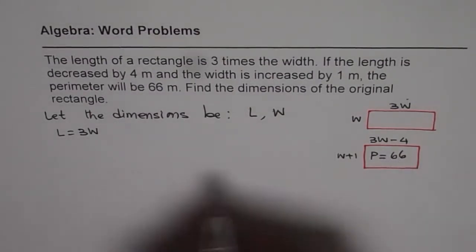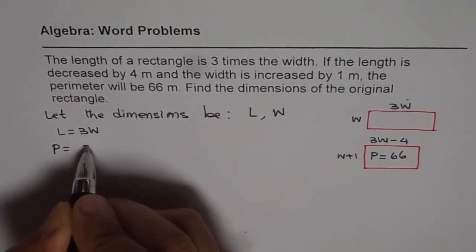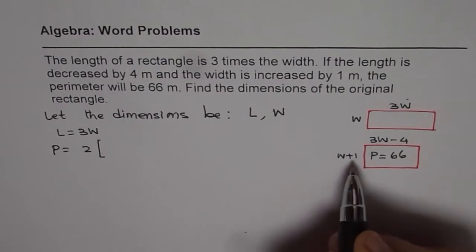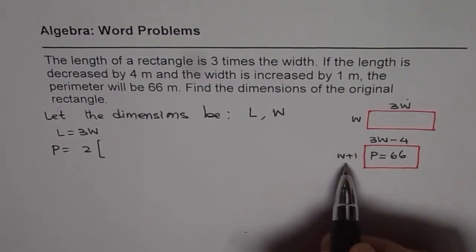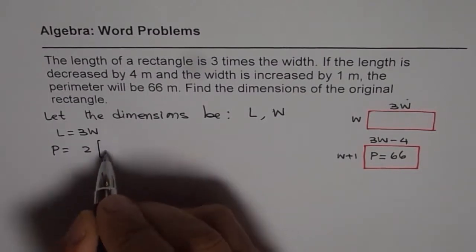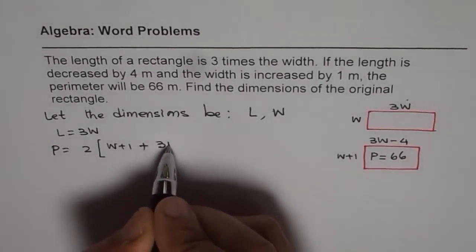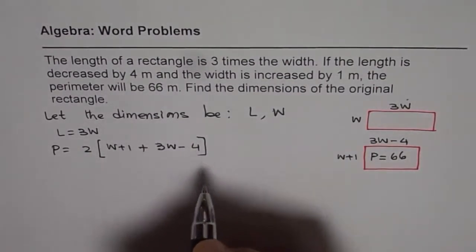So what we have here is that perimeter is two times length plus width. In the modified rectangle, we have width of W plus 1, and length of 3W minus 4. Now this is the perimeter.